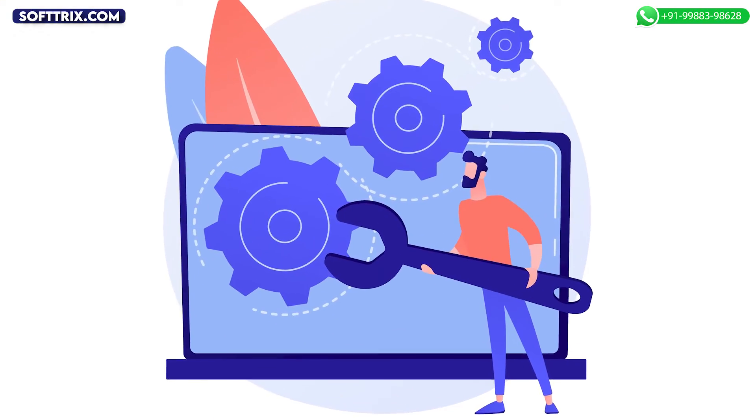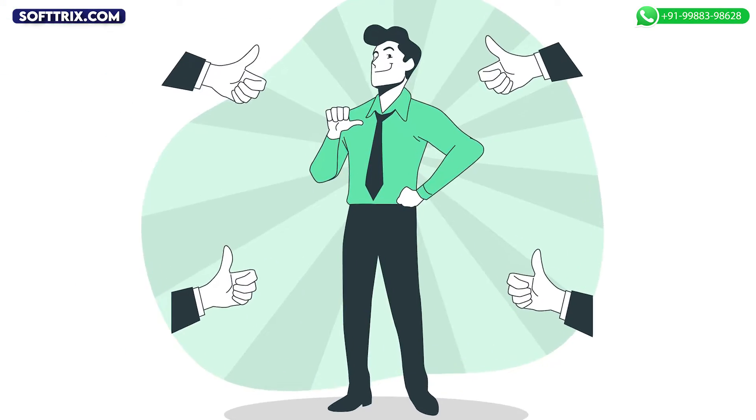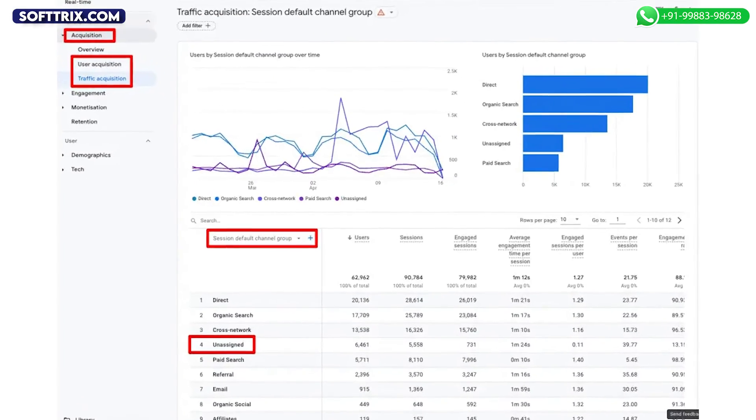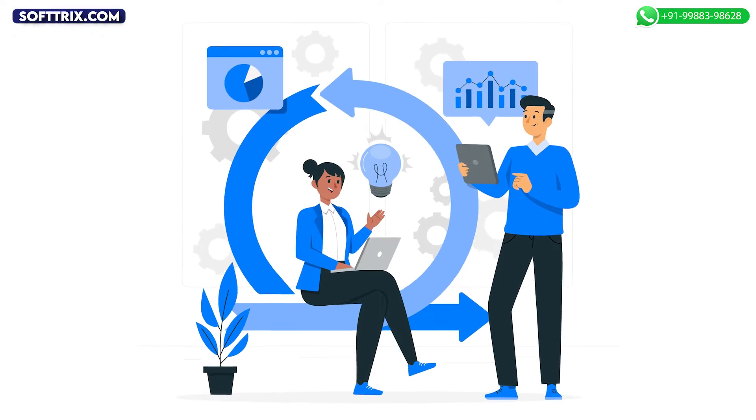Once you've implemented all these fixes, you need to ensure that they've worked. Check your GA4 reports regularly to ensure there is no unassigned traffic. In the worst case scenario, if unassigned traffic still remains, repeat the steps already shared.